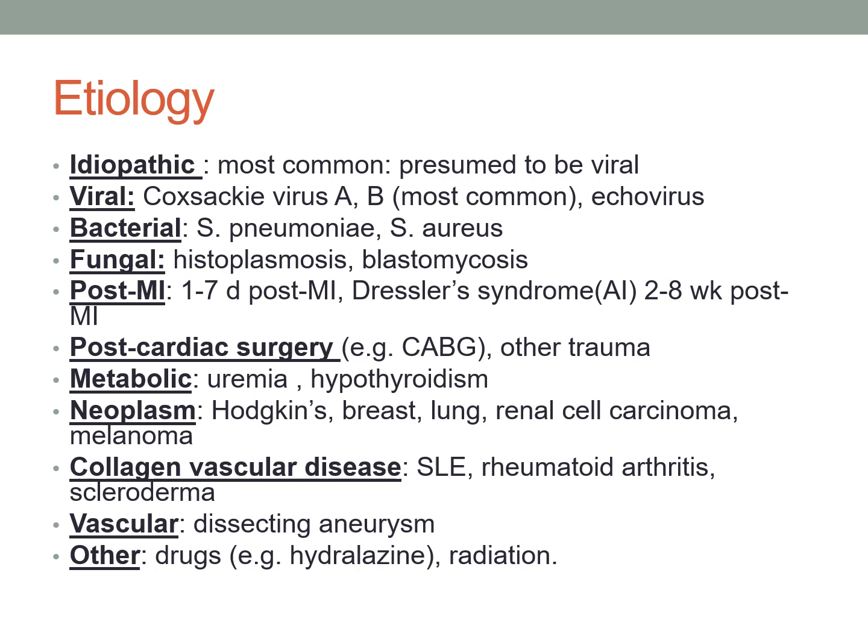Neoplasms such as Hodgkin lymphoma, breast cancer, and lung cancer — cancers which can metastasize into the pericardium — can cause inflammation. Collagen vascular diseases, autoimmune diseases, and vascular conditions such as aortic dissecting aneurysm can also be contributing factors. Drugs and radiation therapies are also involved in the etiology of pericarditis.